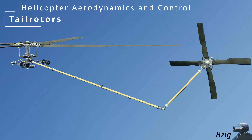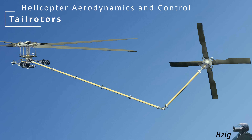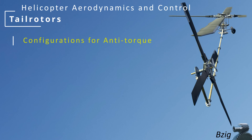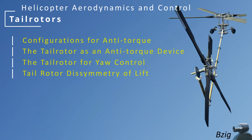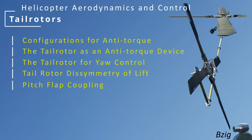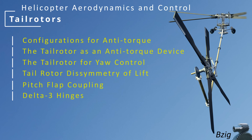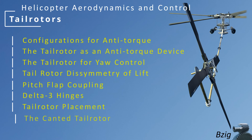Welcome back to this series on helicopter aerodynamics and control. Today we'll talk about helicopter tail rotors. Topics covered include the different configurations for countering main rotor torque, the function of a tail rotor as an anti-torque and yaw control device, how the tail rotor solves the forward flight dissymmetry of lift problem, pitch-flap coupling of tail rotor blades, and the use of delta-3 flapping hinges. We'll also cover design history specific to the Sikorsky Blackhawk, including why the tail rotor is on the right side and why it's canted 20 degrees.